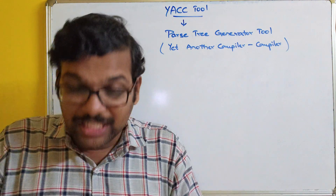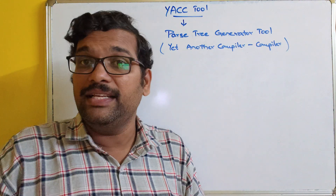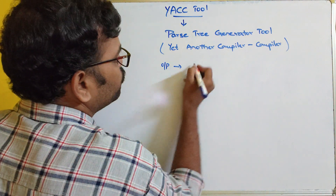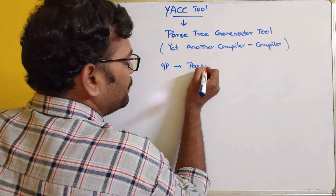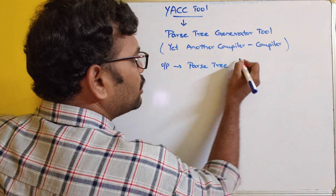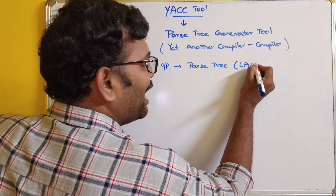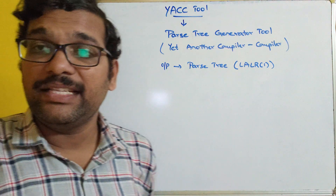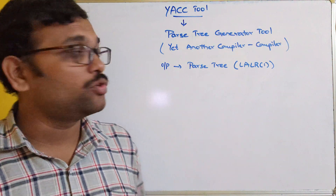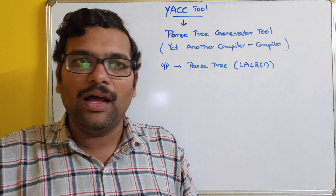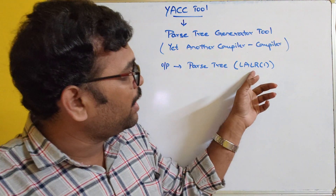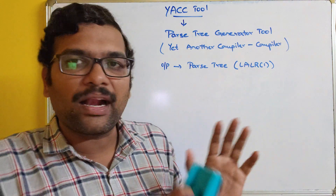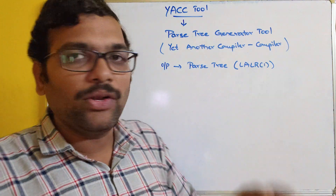The output of this particular tool is a parse tree — specifically an LALR(1) parse tree, which generates an LALR(1) parser. LALR means: look ahead, input string parsed from left to right, using rightmost derivation with one look ahead.